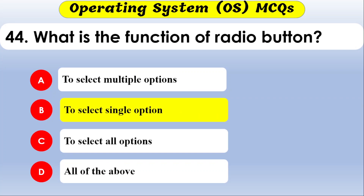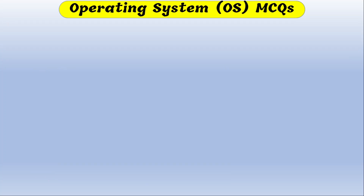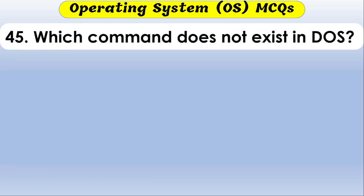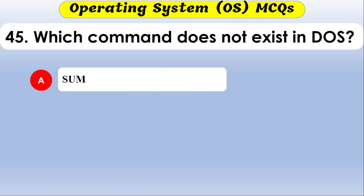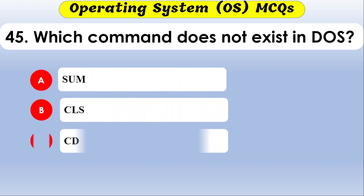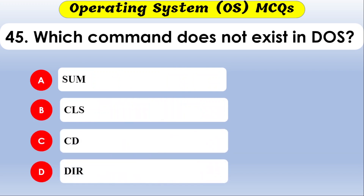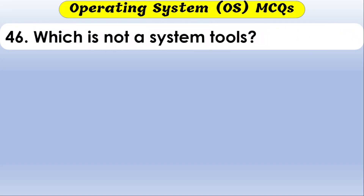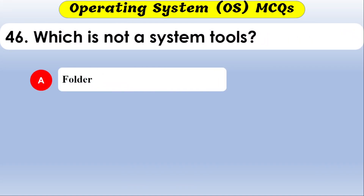Which command does not exist in DOS? The options are CLS, CD, and DIR. The correct option is SUM — it does not exist as a DOS command.